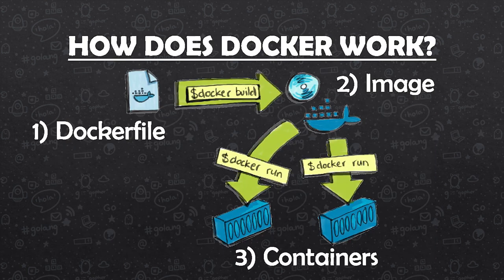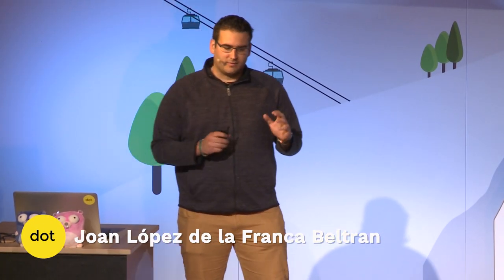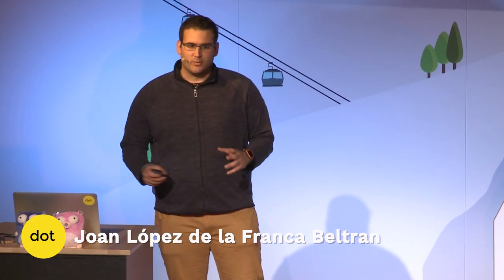But how does Docker work? First of all, as you can see in the image, you have to write a Dockerfile where you will define all the things that will be in the container. Then, through the Docker build command, you can turn this Dockerfile into a Docker image, which is like a snapshot. And finally, with Docker run, you can start a new Docker container with the status of the image previously defined in the Dockerfile.